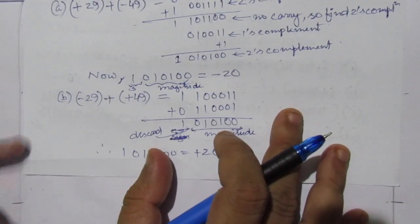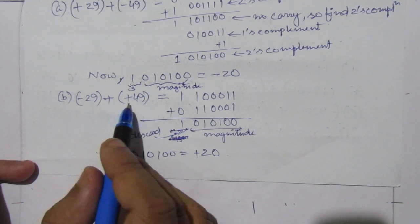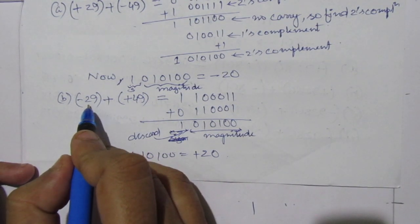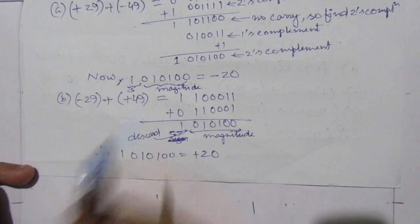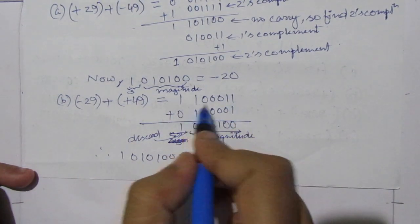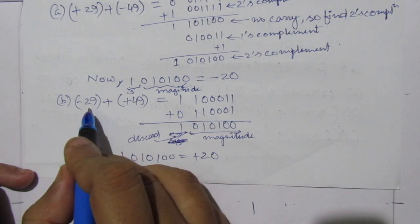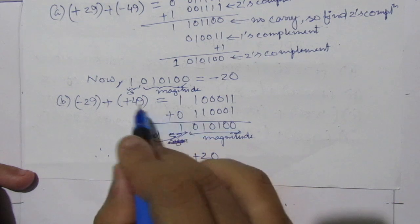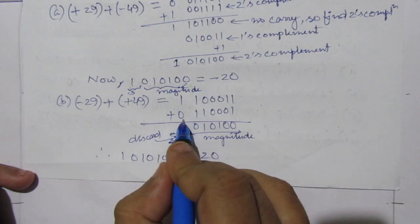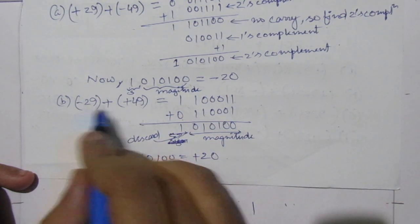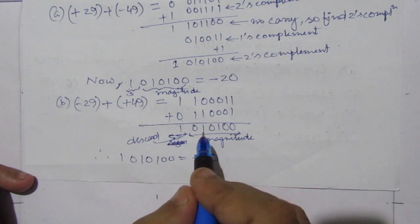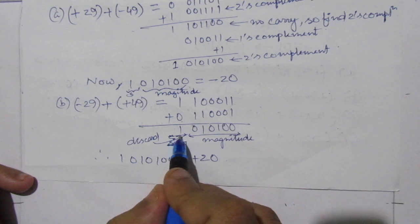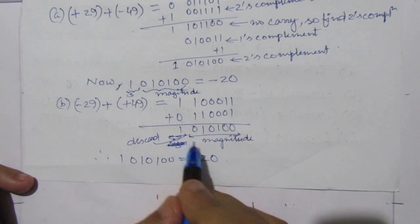In the second part, we have -29 plus +49. We add the 2's complement of 29 to the binary representation of +49. Plus 49 has sign bit 0, and -29 has sign bit 1. After addition, the magnitude is 010100, and the end carry is discarded. The result is positive +20.